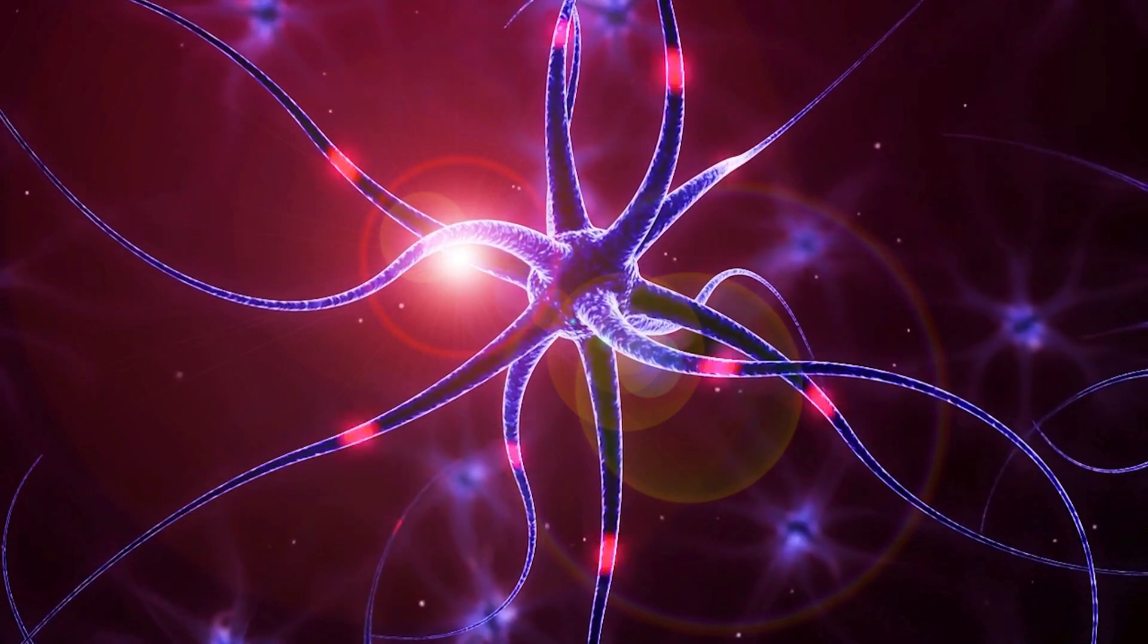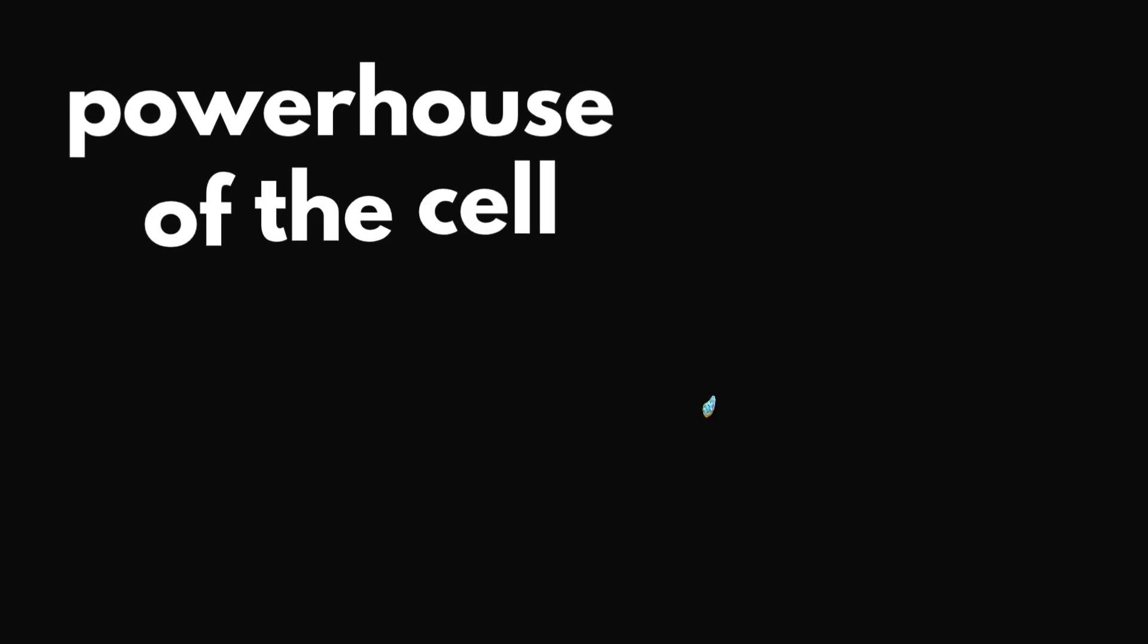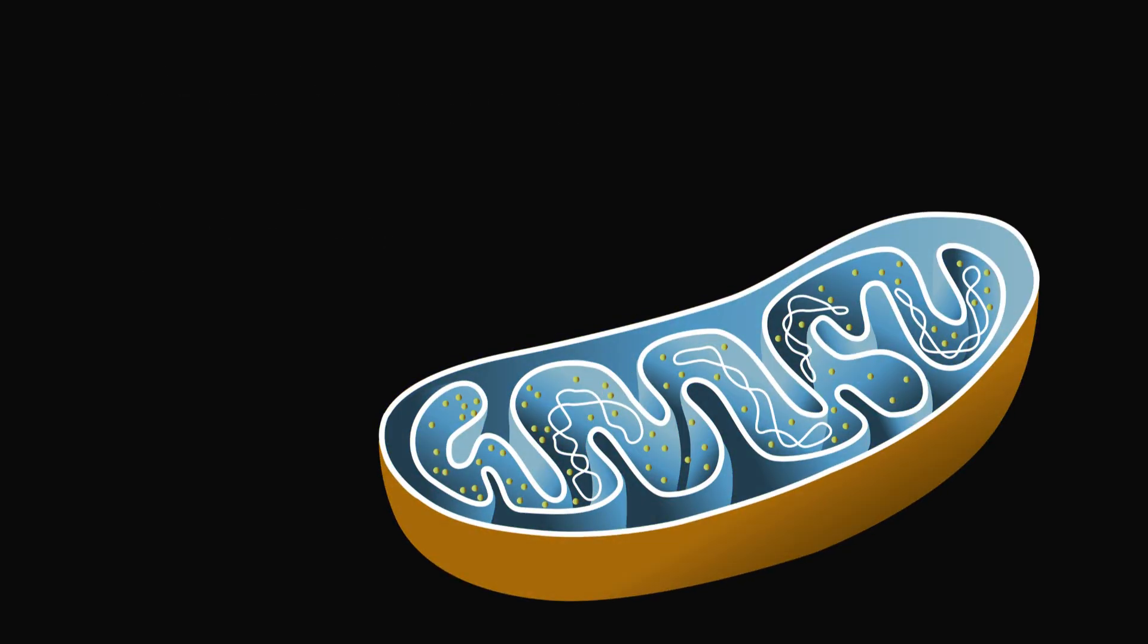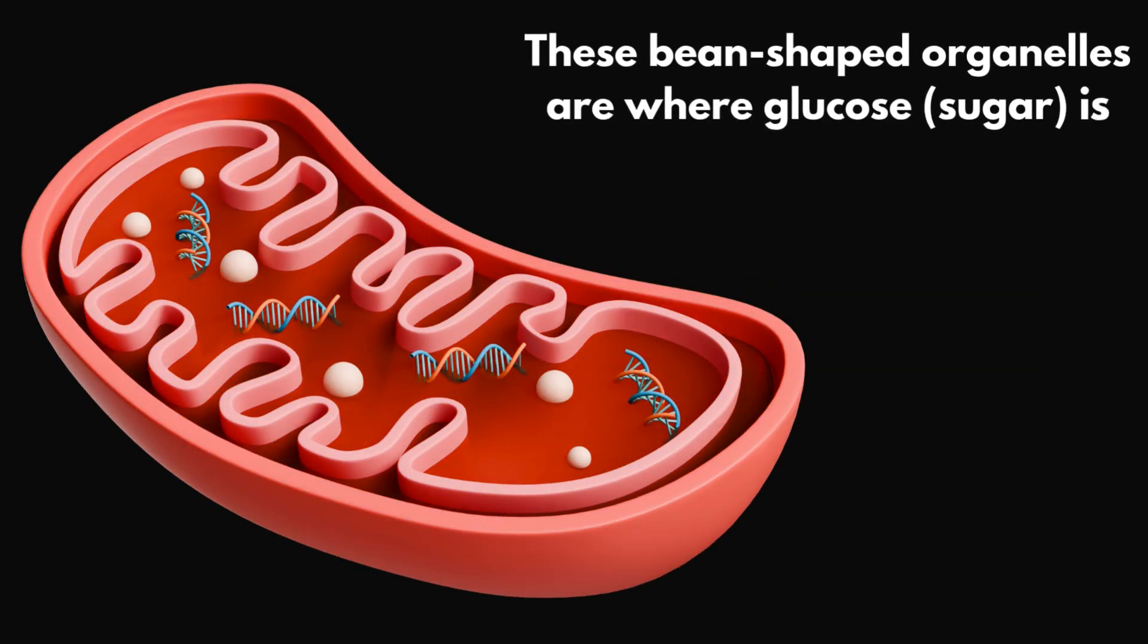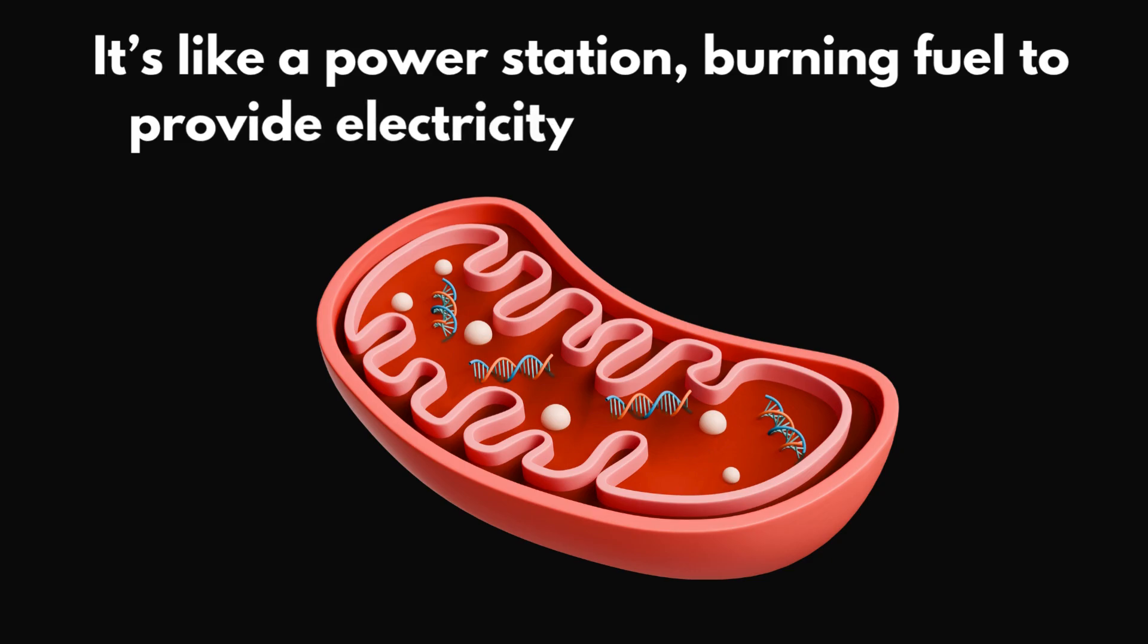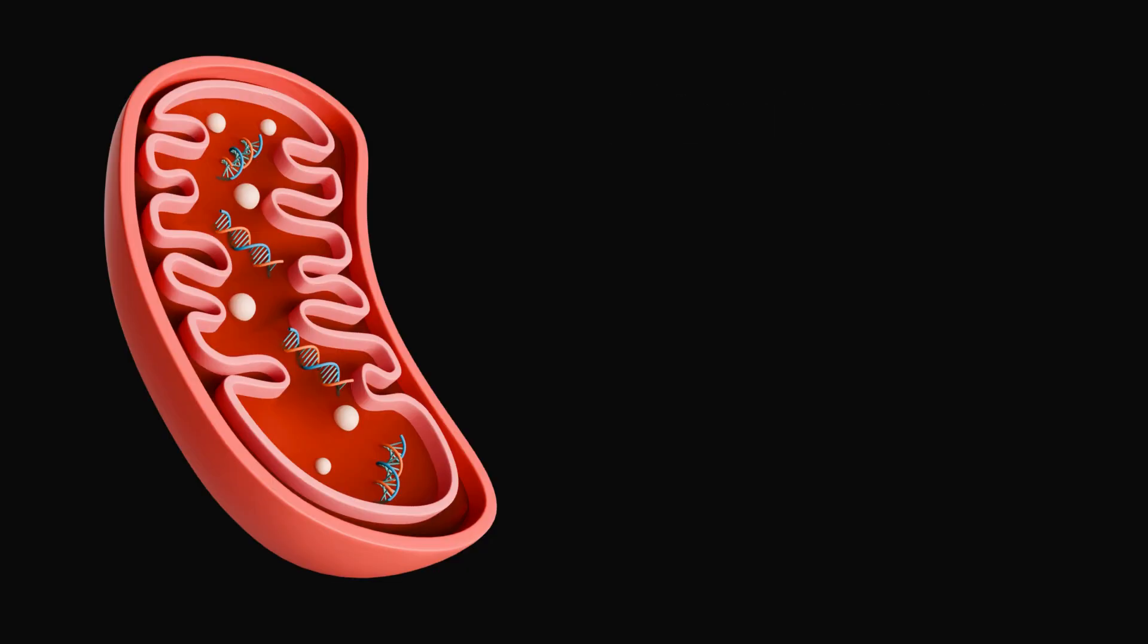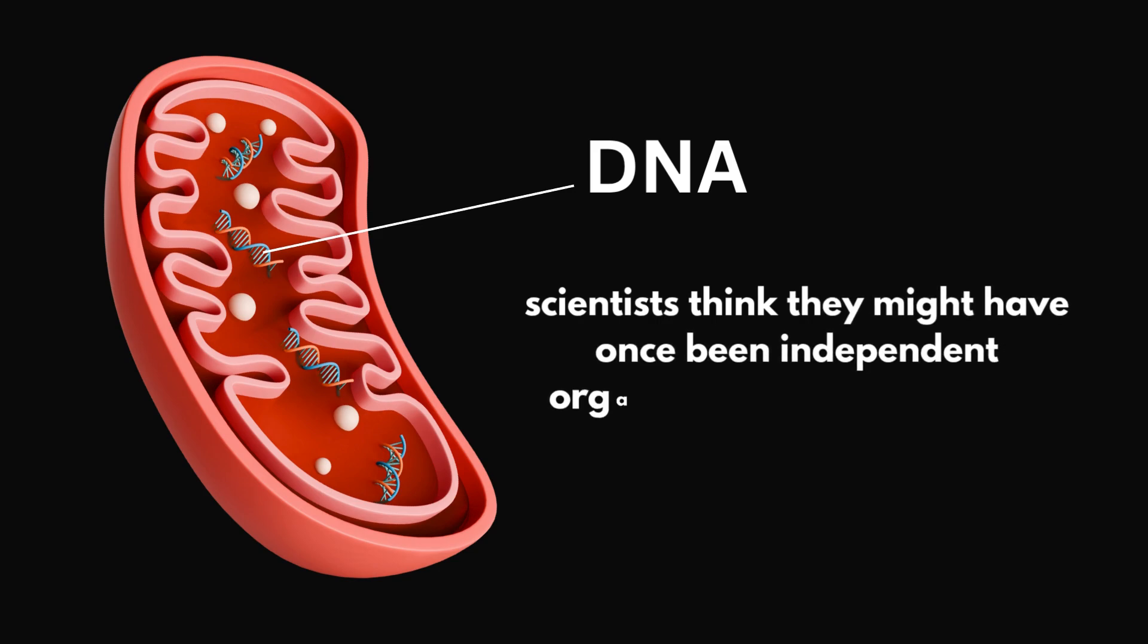But none of this activity could happen without energy, right? That's why we need to zoom in on the mitochondria, often called the powerhouse of the cell. These bean-shaped organelles are where glucose or sugar is broken down to release energy in the form of a molecule called ATP. It's like a power station, burning fuel to provide electricity to the entire city. Without mitochondria, the cell wouldn't have the energy to do anything. Here's a fun fact. Mitochondria even have their own DNA, and scientists think they might have once been independent organisms that merged with larger cells millions of years ago. Mind-blowing!